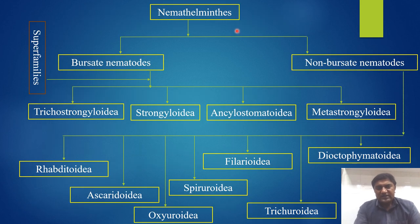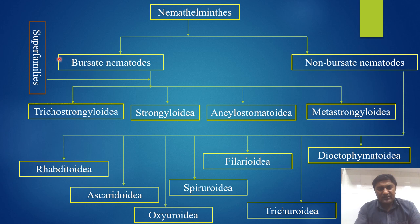Now the sketch of the classification of Nematohelminthes. The Nematohelminthes is divided into two main groups: bursate nematodes and non-bursate nematodes. The bursate nematodes have the following superfamilies: Trichostrongyloidea, Strongyloidea, Ancylostomatoidea, and Metastrongyloidea.